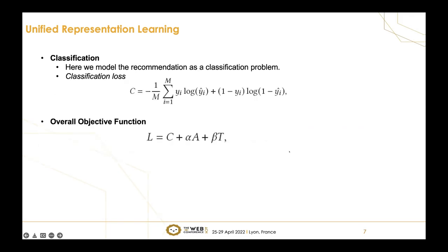At last, we modeled the recommendation as a classification problem. We use binary cross entropy loss here. The overall objective function is L equals C plus alpha A plus beta T, where alpha and beta are hyperparameters we can tune in the later experiments.